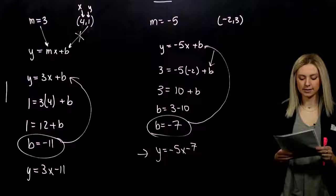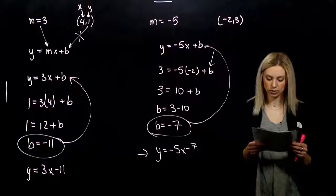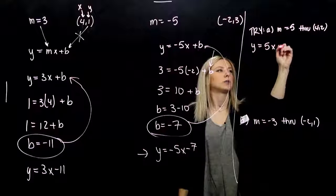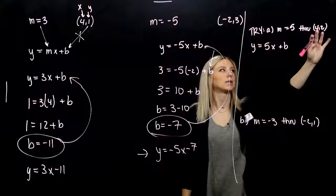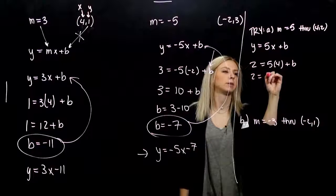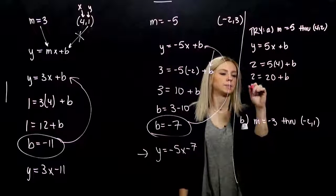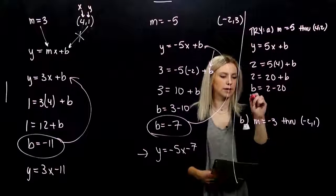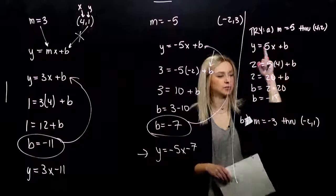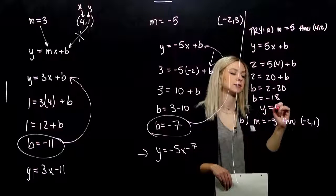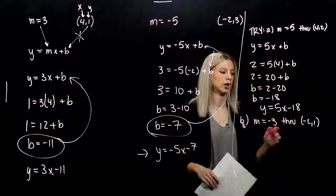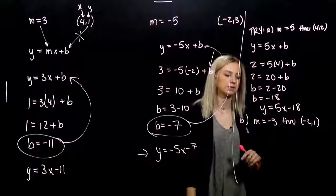Find an equation of the line containing the given points and the given slope. First one: plug in the information we know. I know the slope but not the y-intercept. When I plug in 4 for x, I get 2 for y. 5 times 4 gives me 20 plus b, and b equals 2 minus 20, so b is minus 18. The equation of that line is y = 5x minus 18. Slope is 5, increasing from left to right, and the y-intercept is at (0, -18).